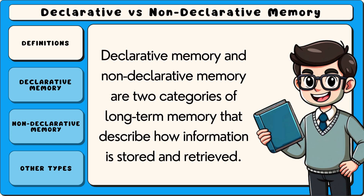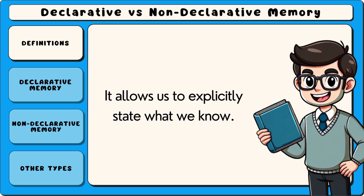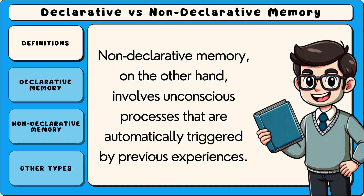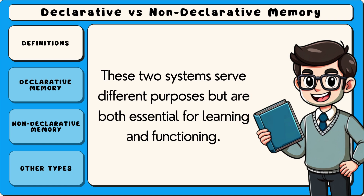Declarative memory and non-declarative memory are two categories of long-term memory that describe how information is stored and retrieved. Declarative memory involves conscious recall of facts, events or concepts and requires active thought — it allows us to explicitly state what we know. Non-declarative memory, on the other hand, involves unconscious processes that are automatically triggered by previous experiences, allowing us to perform tasks and actions without needing to consciously think about them. These two systems serve different purposes but are both essential for learning and functioning.